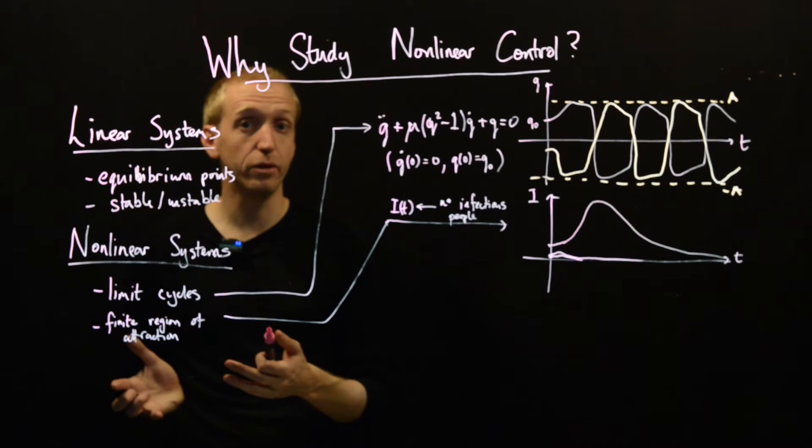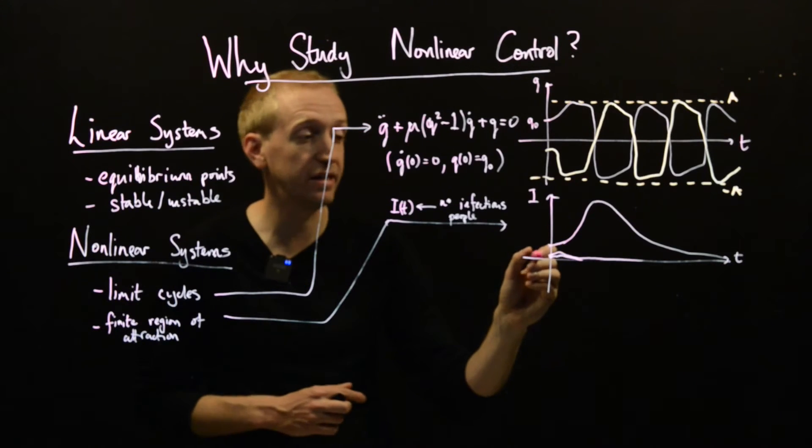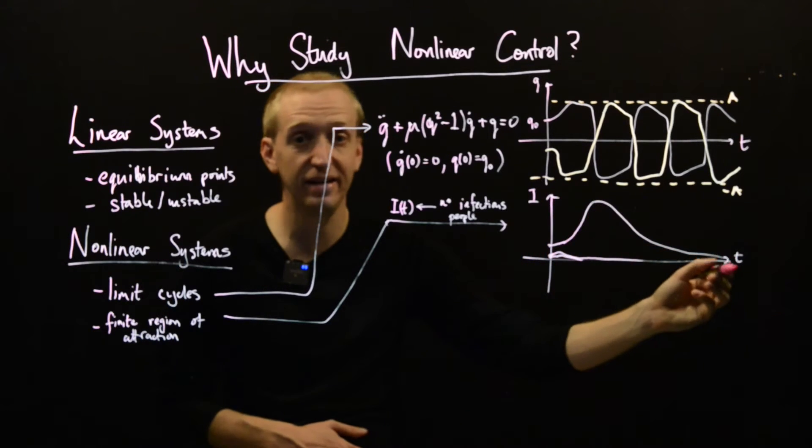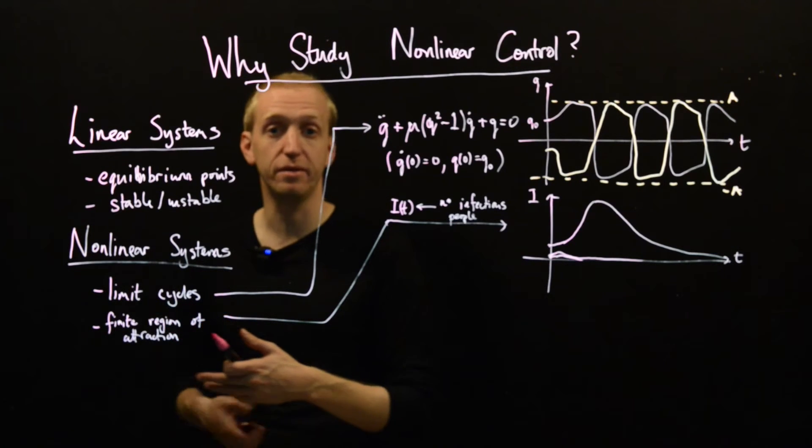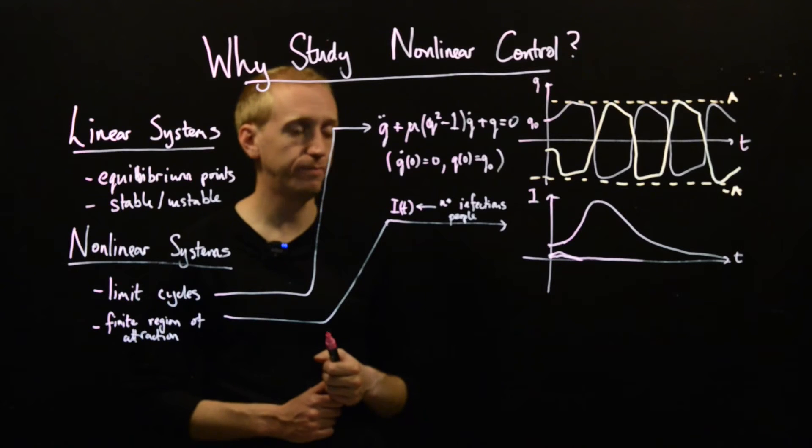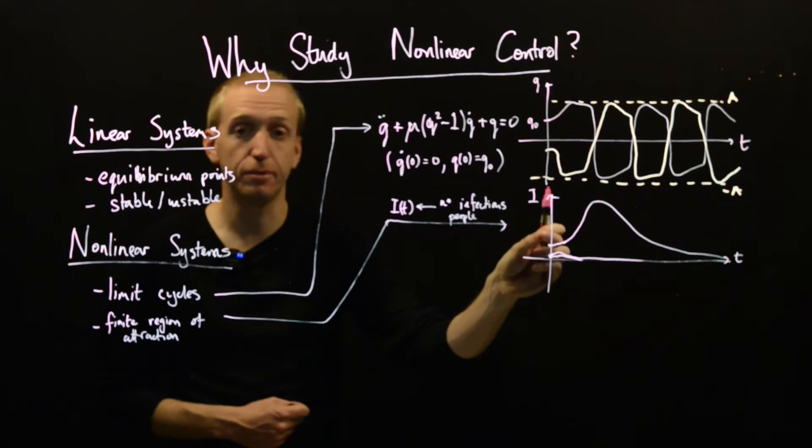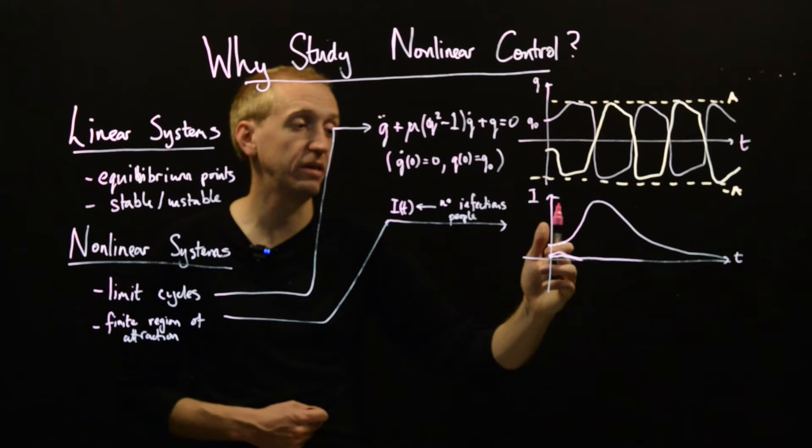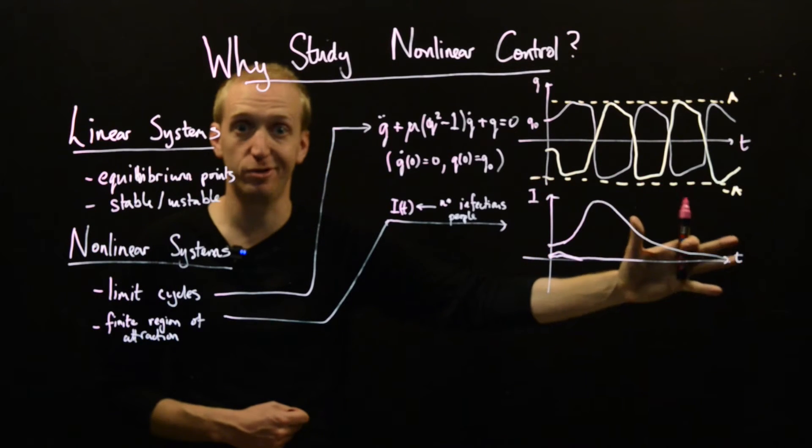So, things sort of might start off okay and then we get overwhelmed and then we end up with a huge outbreak before eventually everyone just recovers of their own accord. And so, what we see is another fundamentally non-linear behavior for scalings of your initial conditions. You might end up with completely different behaviors. And if you think about linear systems, this is something that can't happen and we'll explain a bit why soon.